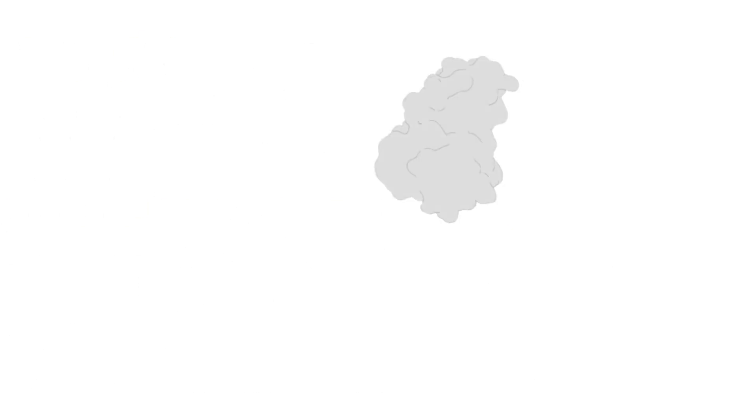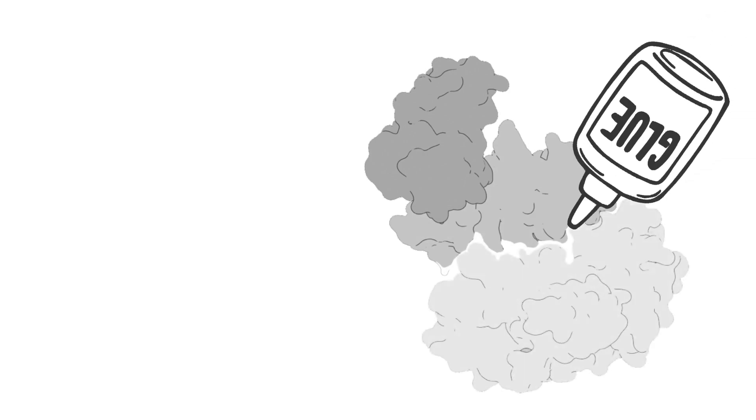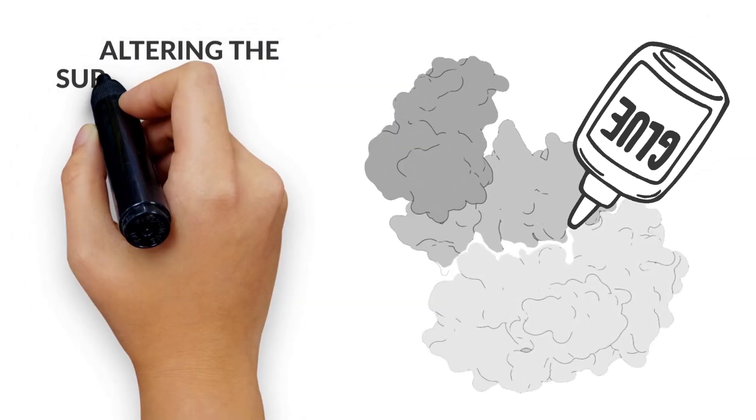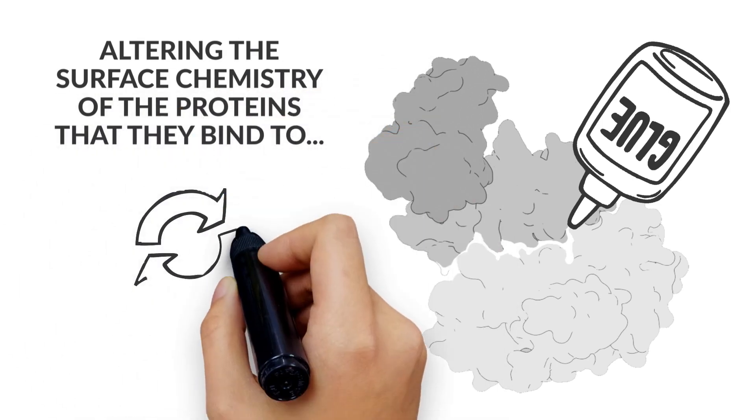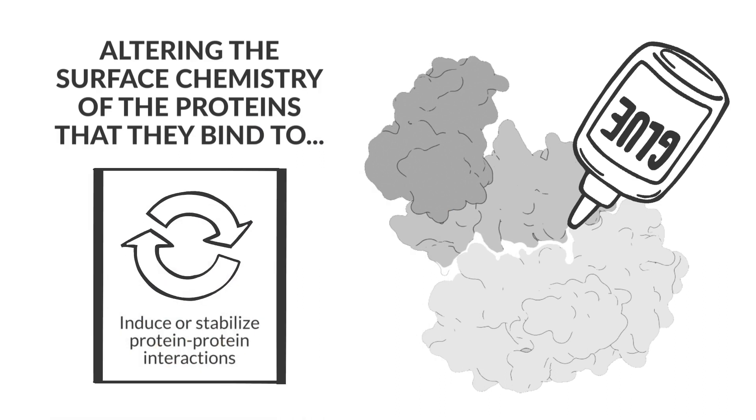We think that many other existing compounds have this molecular glue activity, and by altering the surface chemistry of the proteins that they bind to, such compounds can induce or stabilize many protein-protein interactions, not only with E3 ligases, but also with other proteins.